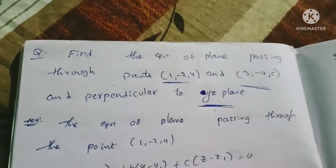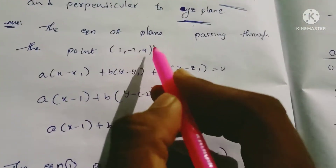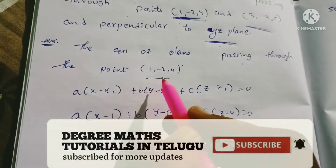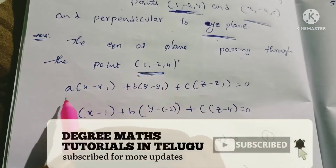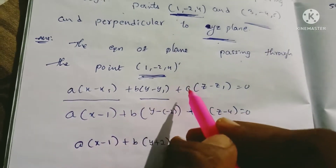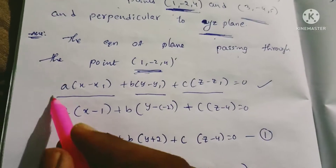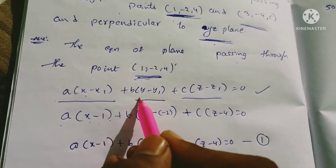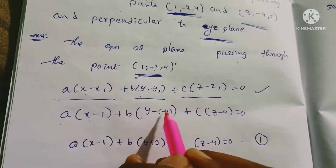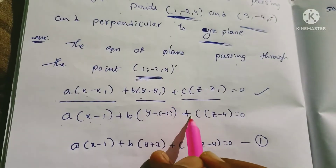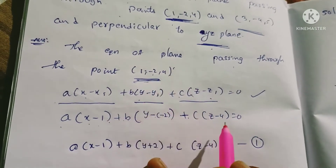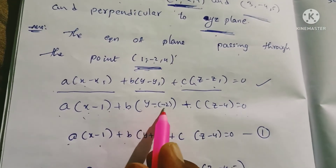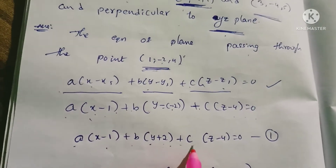So, the equation of the plane passing through the first point. Let's take the plane equation: A(x - x₁) + B(y - y₁) + C(z - z₁) = 0. So, A(x - x₁ = 1) + B(y - y₁ = -2) + C(z - z₁ = 0). Therefore, A(x - 1) + B(y + 2) + C(z - 4) = 0. This is equation 1.